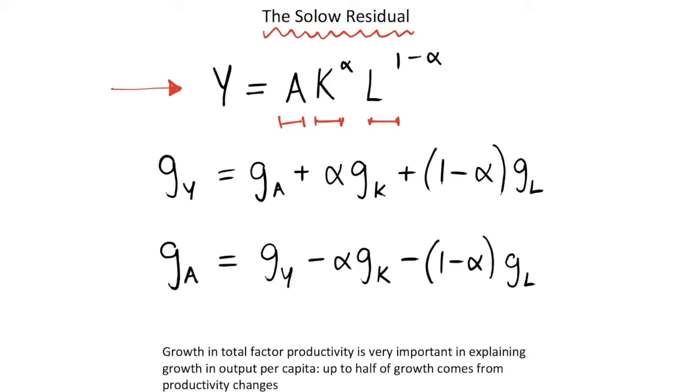Then multiplied again by the labor stock to the power of 1 minus alpha. These alpha powers of capital stock and labor stock are just telling us the relative shares of the national income that goes to each factor of production.